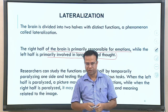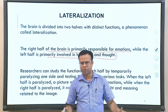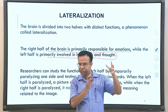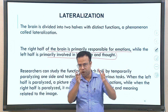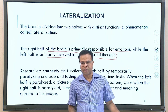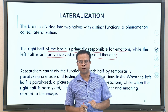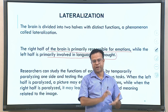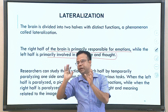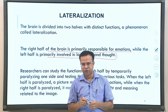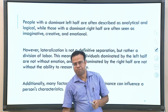Researchers studied these functions by temporarily paralyzing one side of the brain using chemicals, then observing which functions were dominant in the remaining active part. When the left half was paralyzed, a picture could elicit emotional experiences, indicating the right half was responsible for emotions. When the right half was paralyzed, it led to logical thoughts and meaning-related processing of images.